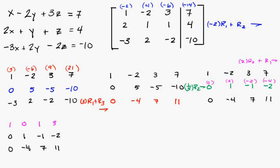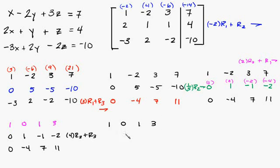Now we want to get a 0 here. So let's multiply this row times 4 plus row 3. This gives us 1, 0, 1, 3. So 4 times 0 is 0, 4 times 1 is 4, negative 4, negative 8.